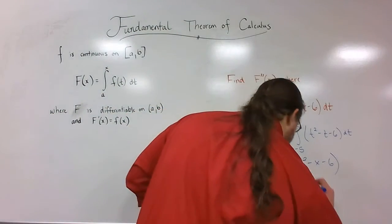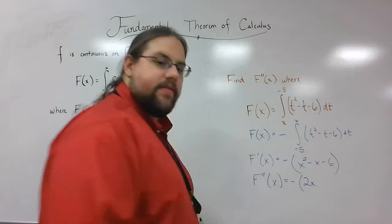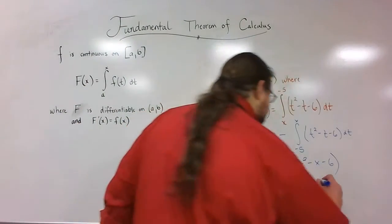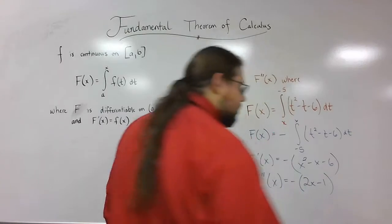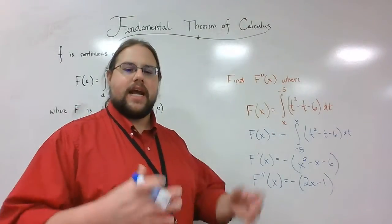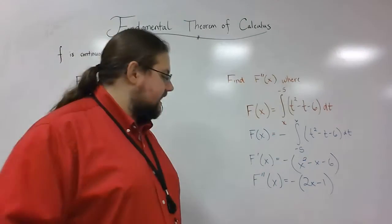Derivative of x squared is 2x. Derivative of negative x is negative 1, and the derivative of any constant term is just 0. So I don't even have to worry about that negative 6 at the end anymore. So there's my final answer.